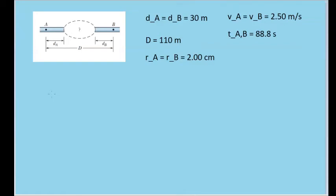In this problem, we have a lengthy pipe that runs through a hill. Even though we have the radii of the pipe outside the hill at points A and B, we don't know what the pipe is like inside the hill and we don't want to dig it up to find out. So we are going to use what we know about fluid mechanics to find the average radius of the pipe within the hill.